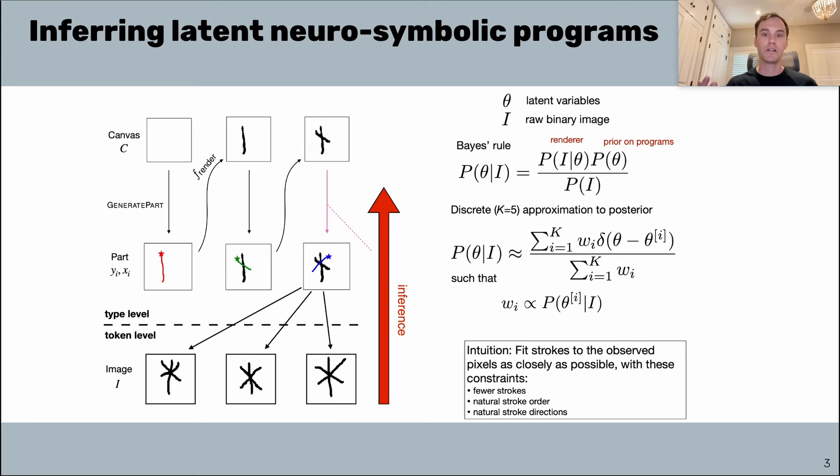We use this machinery to help support a variety of few-shot concept learning tasks. This is really the core for how our model is able to perform the Omniglot challenge of few-shot concept learning.